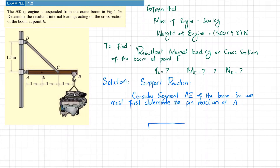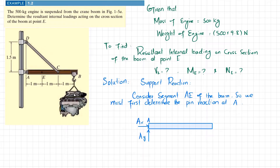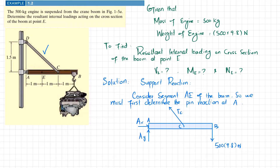We will draw the free body diagram of the boom. At point A, when you remove the pin support, there will be a horizontal reaction force A_x and a vertical reaction force A_y. At the end of the beam there is the weight of the engine: 500 × 9.8 N. At point C there is a support CD, represented as force F_CD.